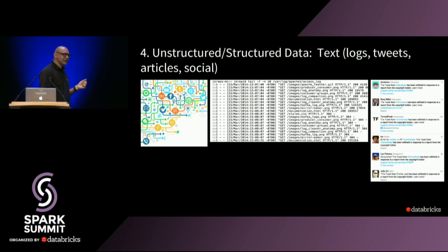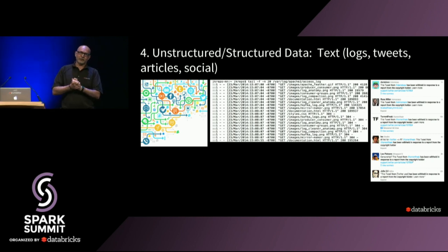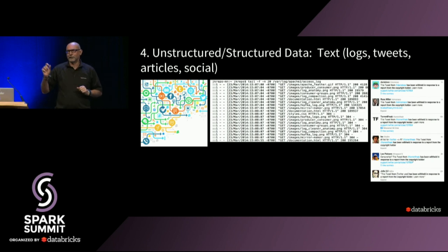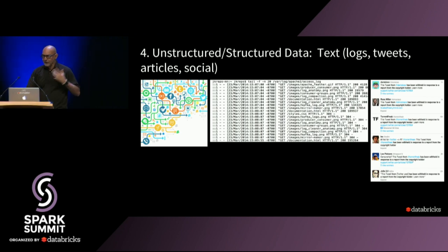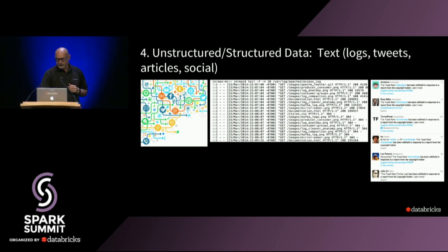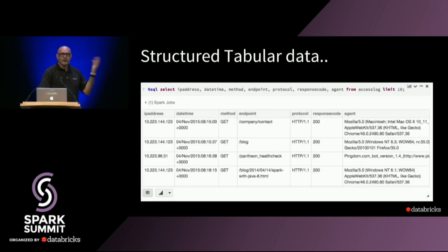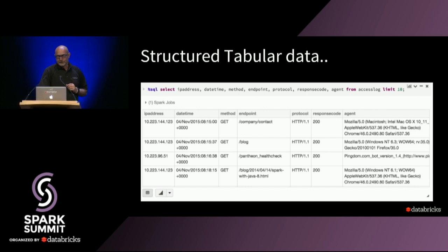The fourth characteristic is that data could be unstructured or structured. Unstructured examples include media streams, social media articles, or log files. RDD doesn't understand different kinds of types — it's just going to be a string. It's up to you as a developer to parse that out. They can have both unstructured and semi-structured attributes, and after parsing you might create a structured table.